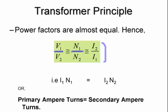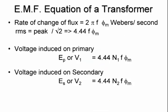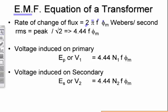Because we would normally increase the voltage and decrease the current, or the other way around, the primary ampere-turns equals the secondary ampere-turns. Now we have an EMF equation for the transformer. The rate of change of flux is 2π f times the flux, and the RMS value is the peak divided by √2, giving us 4.44 times the frequency times the flux. So the voltage induced in the primary is 4.44 — that's for a sine wave — times the number of turns, the frequency, and the flux. Similarly for the voltage induced in the secondary.